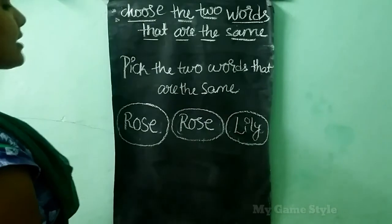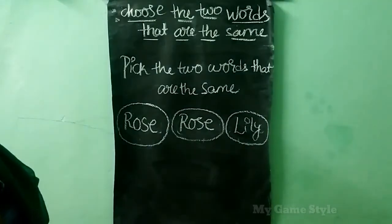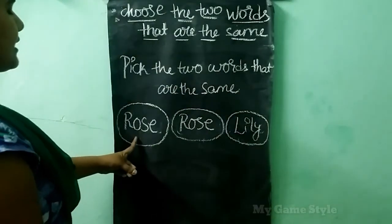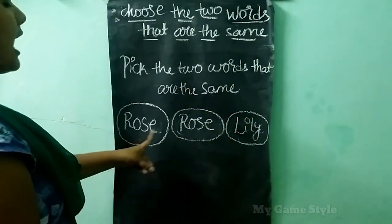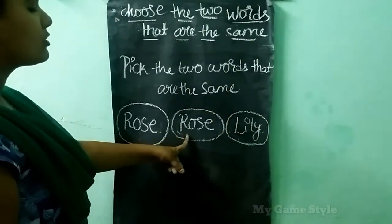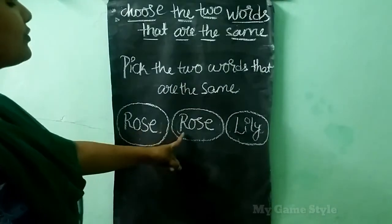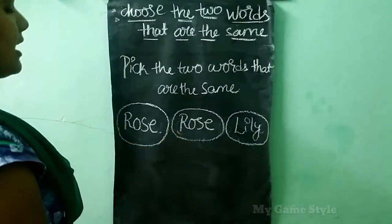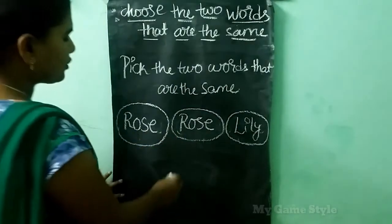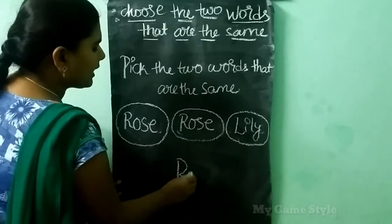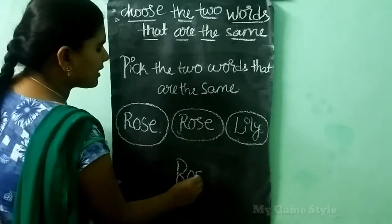Which words are same here? Here it is Rose, and this is also Rose. This Rose word is same. So Rose is a correct answer.